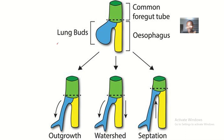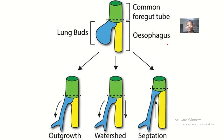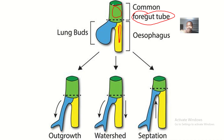The esophagus develops from the foregut, immediately below the primordial pharynx and above the stomach. The esophagus is shown in yellow, developing from the foregut tube, while the pharynx shown in green is above it. So the esophagus is below the pharynx but above the stomach.